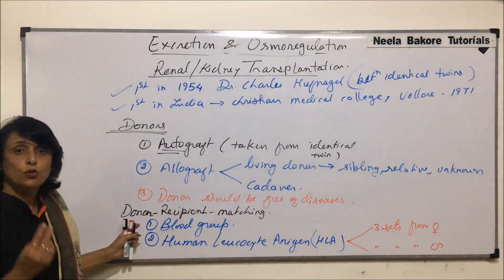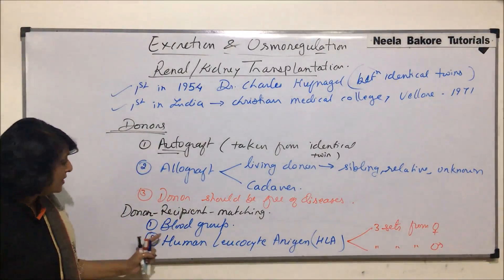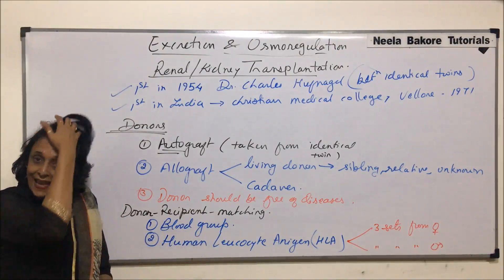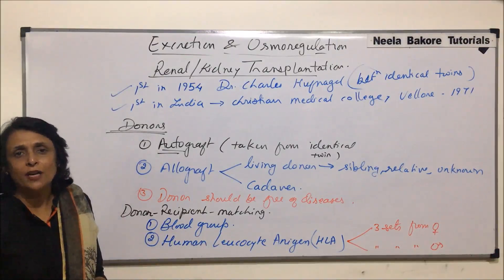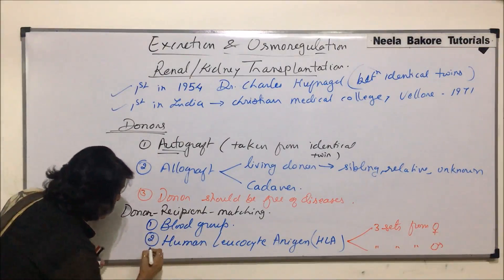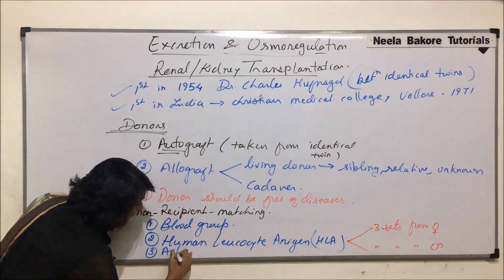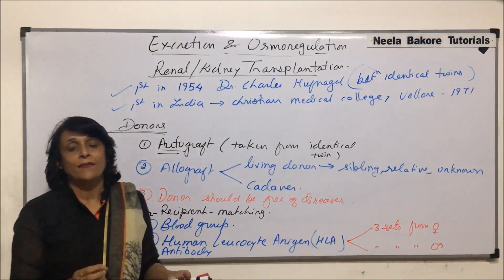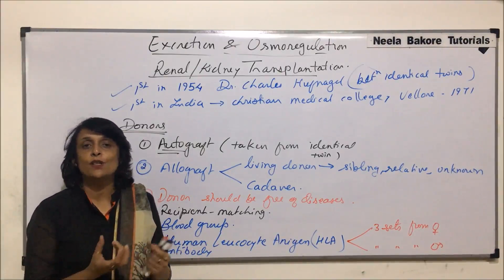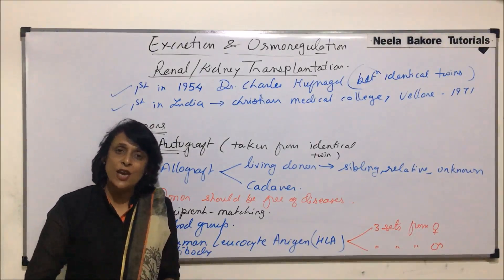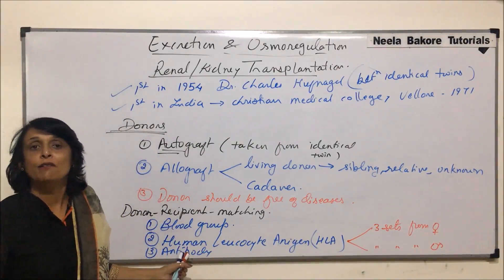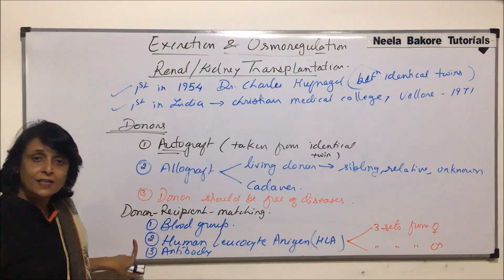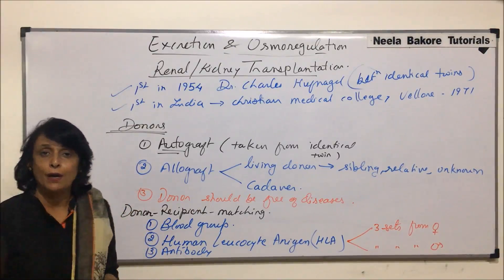So there are two main things which are to be matched: blood groups and human leukocyte antigen. Additionally, antibody matching is also done, where blood from donor and recipient is mixed in a test tube and checked for any kind of reaction. But the main two things are the leukocyte antigen and the blood groups.